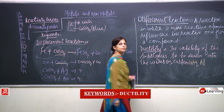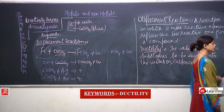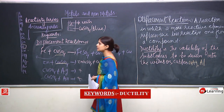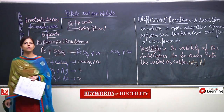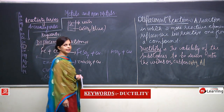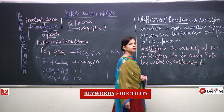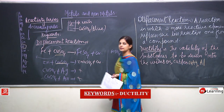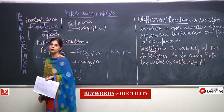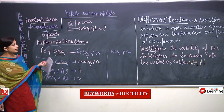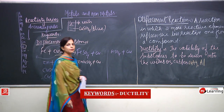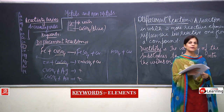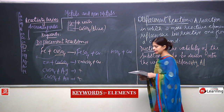The embroideries on saris or fabrics that are done with gold, silver, and copper threads — those metals have to be drawn into thin thread-like wires to be used for embroidery. This is the meaning of ductility. The next keyword is 'elements,' which we have already discussed.